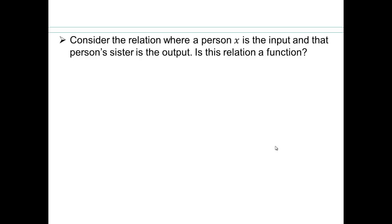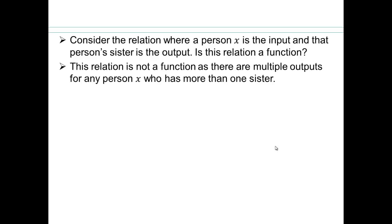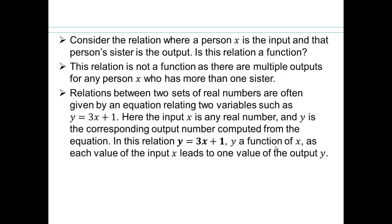Now maybe there is somebody else who has two sisters. Since I only have one sister, I'm OK. But another person might have two sisters. And how do you decide which one would be the output? And so clearly you can see this relation would not be a function. And that's because a person can have more than one sister. So you can have multiple outputs. So this relation is not a function.